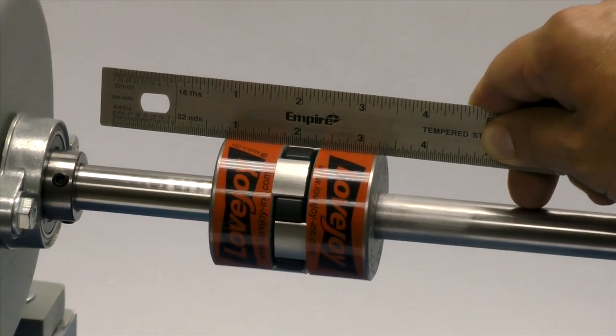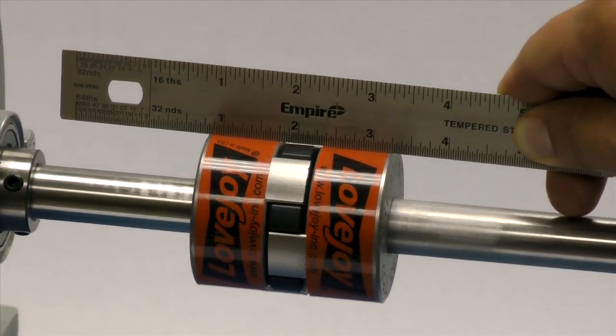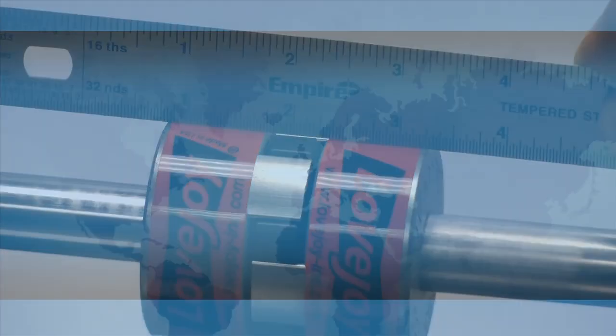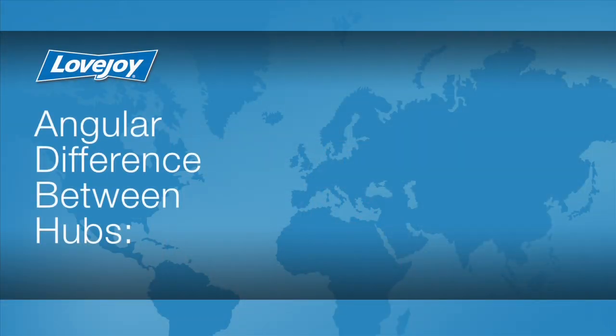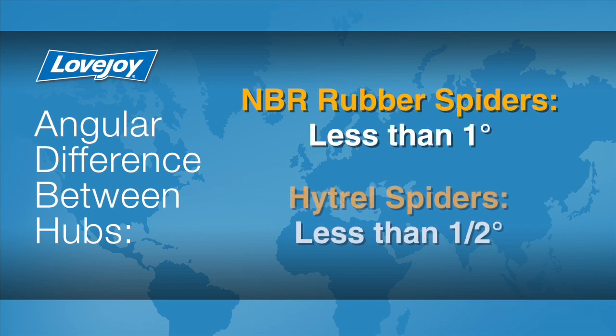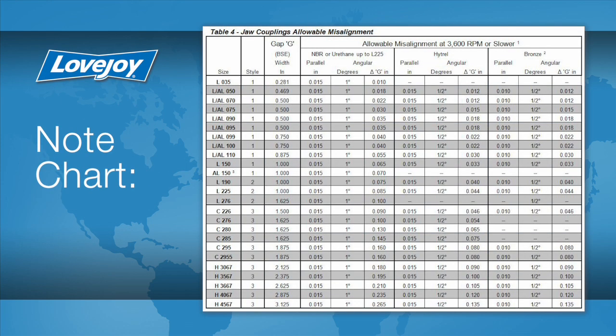The offset between the two hubs must be less than 1/64th of an inch to prevent damage to the coupling. The angular difference between the two hubs should be less than one degree for NBR rubber spiders or less than a half a degree for Hytrel spiders. If the alignment exceeds the allowable amount, as shown on the following chart, realign the equipment to correct this condition.